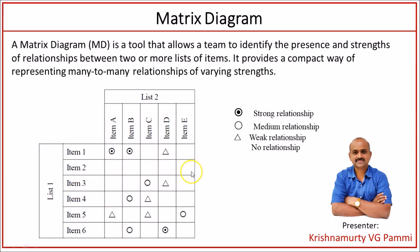Blank cells are used to denote no relationship. For example, item 2 is in no way related to item A, item B, item C, item D, or item E. Similarly, item 3 and item A are not related — there is no relationship between them.